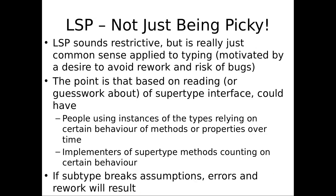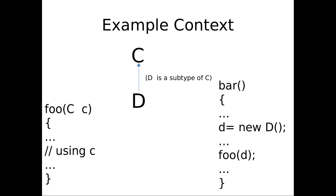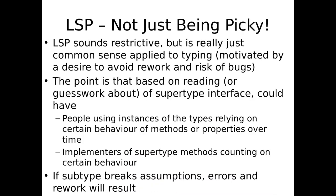The Liskov substitution principle sounds restrictive, but it's just common sense — not introducing trouble, not leading to disappointed expectations, avoiding bugs. People count on certain things about the supertype. For example, this is immutable — it won't change once you create it. And if you pass them something which violates that, like you pass them a D that changes out from under them, their code could break. The people relying on the features of the supertype shouldn't be disappointed by subtypes.